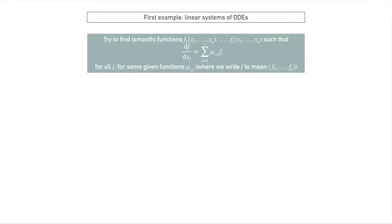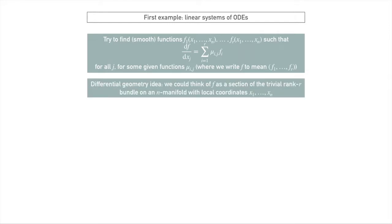To start off we'll talk about what is a linear system of ODEs. A linear system of ODEs can be phrased as this problem: if we're given a bunch of differential equations in the form of df by dxj equals some linear combination of the f, then can we find smooth solutions to these differential equations. Another way of phrasing this could be can we find a section of a trivial rank r bundle, and this is the approach we will take to formalize what we mean by connections and curvatures.